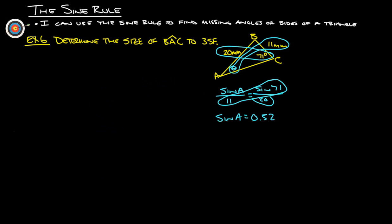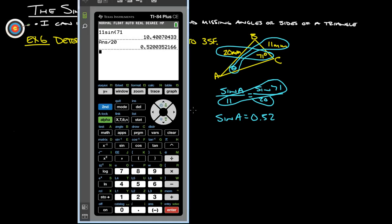But we want to know what the angle is, so what we got to do is we got to do second sine of that answer. So, I'm going to do second sine, second answer, and that will tell us what the angle is, 31 point.